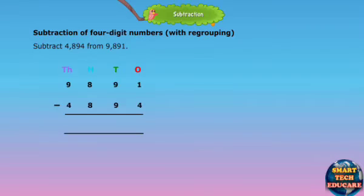Subtraction of 4 digit numbers with regrouping. Subtract 4,894 from 9,891. Steps: